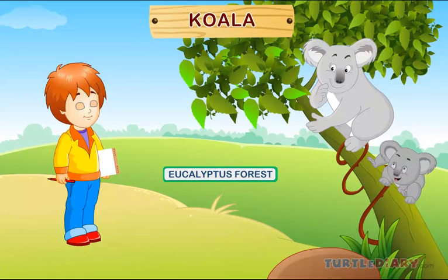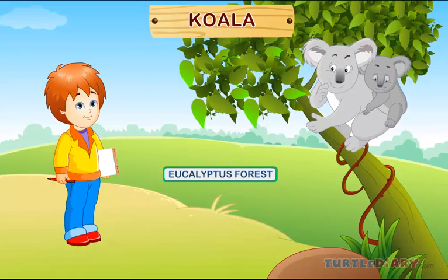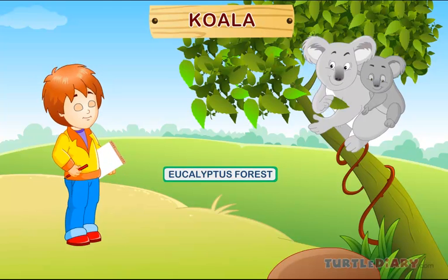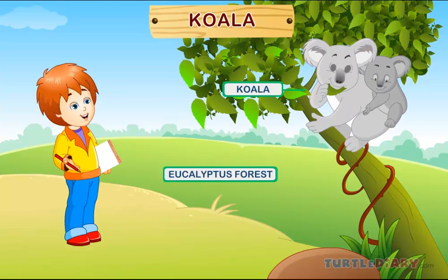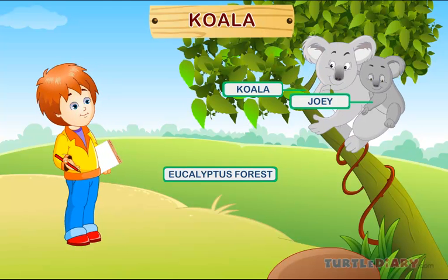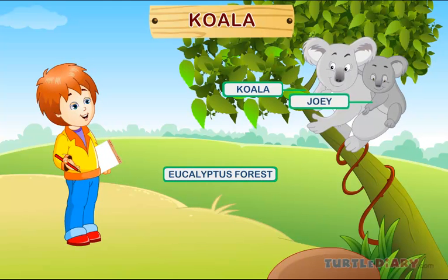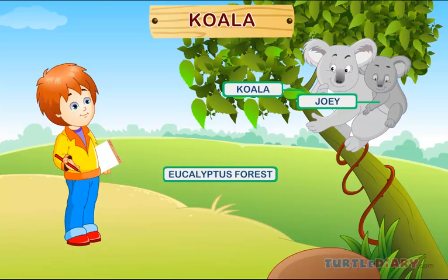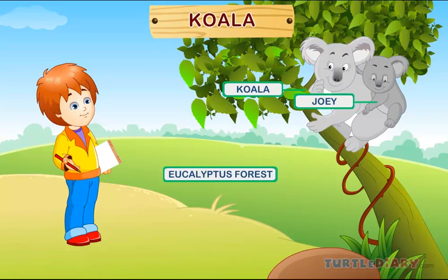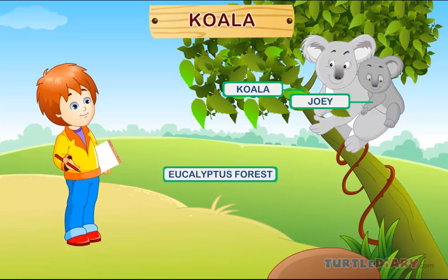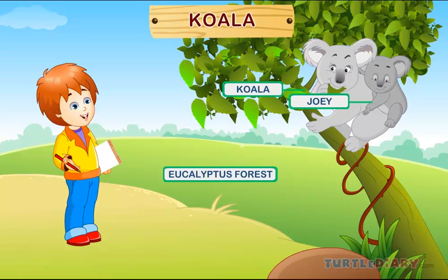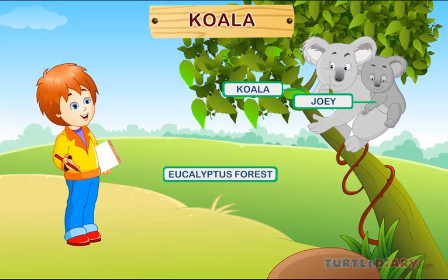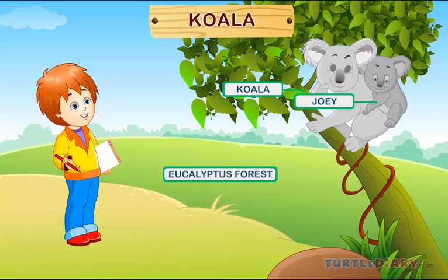Koala. Here is a koala. A baby koala is called a joey. Koalas are mainly found in the eucalyptus forests of Australia.